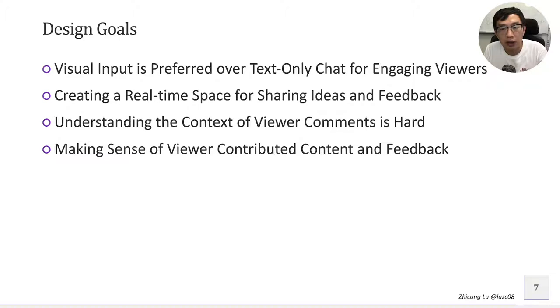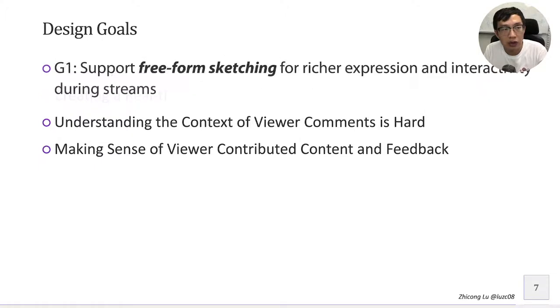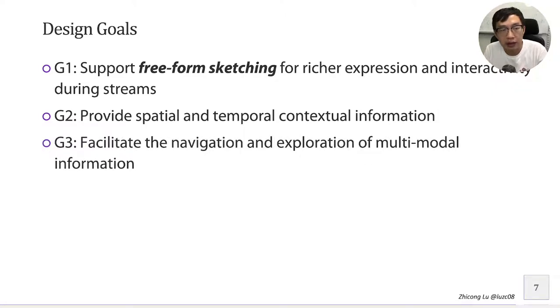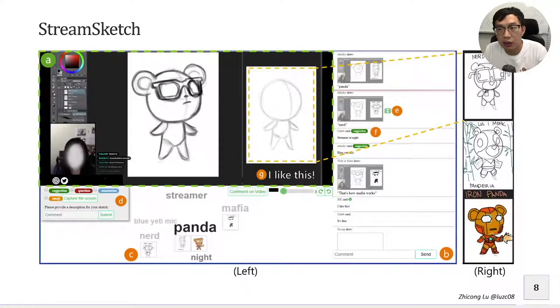Based on these key findings from the formative studies, we proposed three design goals: first, to support free-form sketching for richer expression and interactivity during live streams; second, to provide spatial and temporal contextual information; and third, to facilitate the navigation and exploration of multi-modal interaction. StreamSketch was designed to support creative live streamers in engaging viewers using two modalities: sketch and text.